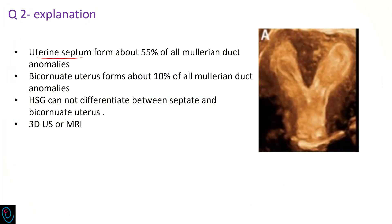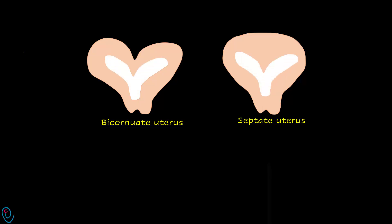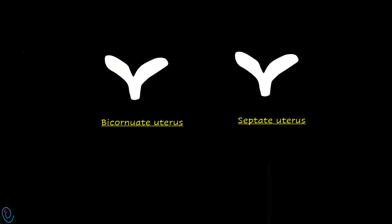Uterine septum accounts for about 55% of all Müllerian duct anomalies, while bicornuate uterus accounts for about 10%. Hysterosalpingography cannot differentiate between septate uterus and bicornuate uterus, because when we inject dye inside the uterine cavity, the X-ray visualizes the radio-opaque dye but not the uterine wall. For this reason, bicornuate uterus and septate uterus have a similar picture during hysterosalpingography.